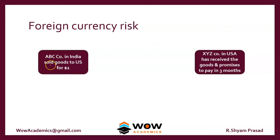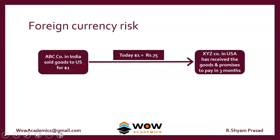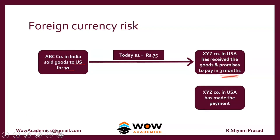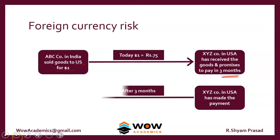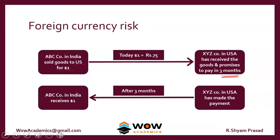For example, assume ABC Co. is an Indian company selling goods to the US. The agreed payment is one dollar, and today's rate is one dollar equals 75 rupees. XYZ Co. in the USA has received the goods and promises to pay in three months' time. After three months, the Indian company receives the one dollar.